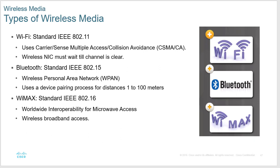Wireless media is 802.11 with variants A, B, G, N, AC, and more. Bluetooth is 802.15 — your personal area network for keyboards, mice, and headsets. WiMAX is 802.16, where providers rent space on cell towers, buy bandwidth from a local ISP, and resell wireless bandwidth to all people in that coverage area.